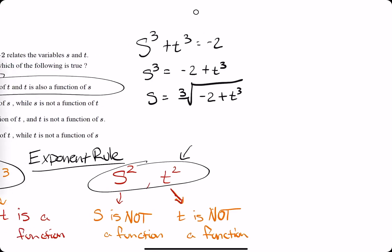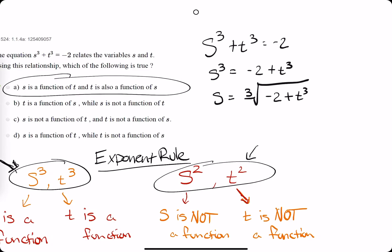Now, the same thing would happen if we solve for t on one side. In the next video, I'll talk about why some s squared and t squared pieces would not be functions. Thanks.